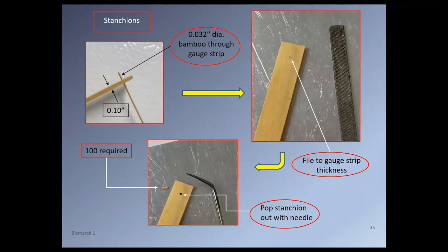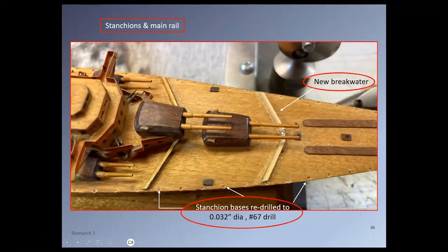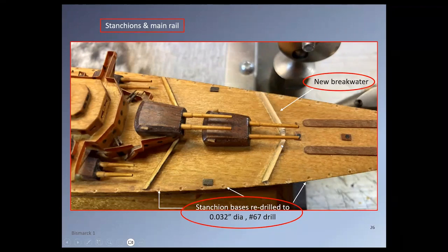The stanchions here were set into the location of the original holes in the deck after re-drilling them. Here I've also shown the replacement of the forward breakwater, which I found was not quite symmetrical in the original model. So I straightened it up and put this new replacement breakwater in position.